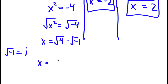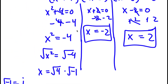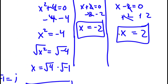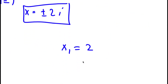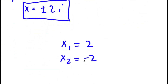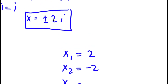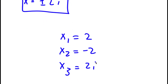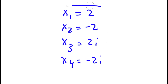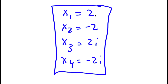So x is equal to positive or negative 2i. Therefore, my four solutions are x equals positive 2, x equals negative 2, x equals positive 2i, and x equals negative 2i.